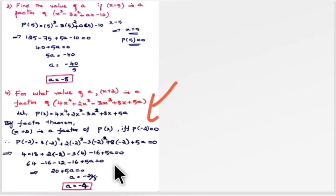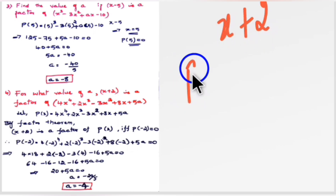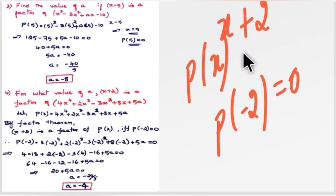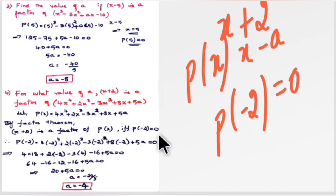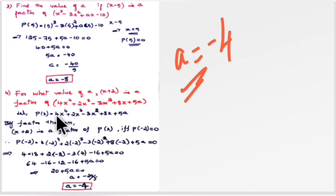Next sum: for what value of 'a' is (x + 2) a factor of the given polynomial? The factor is (x + 2). By factor theorem, (x + 2) is a factor of p(x) if p(−2) = 0 — comparing with (x − a), a = −2. So substitute x = −2 into the polynomial, equate to zero, and solve. On solving you get the value of a = −4.